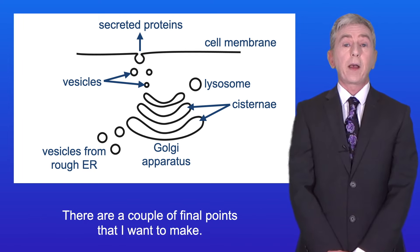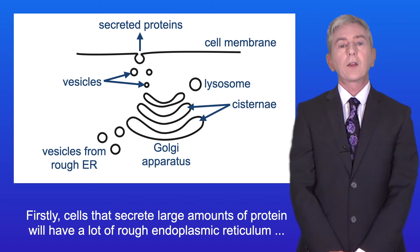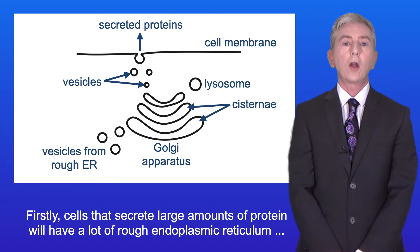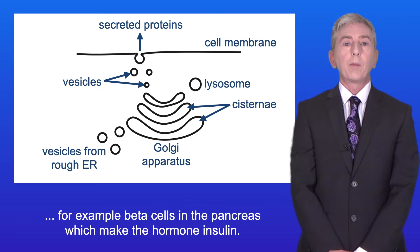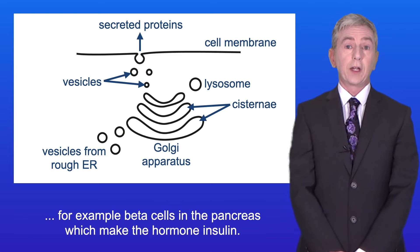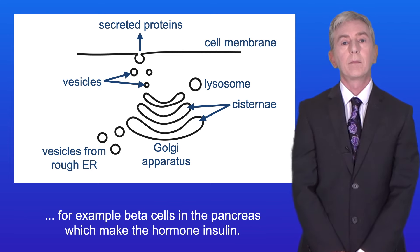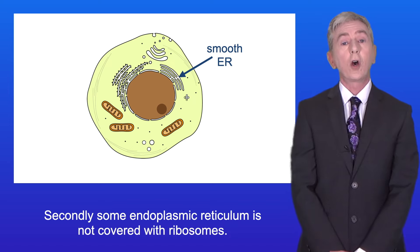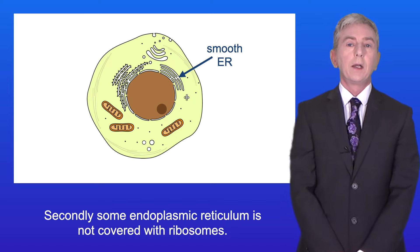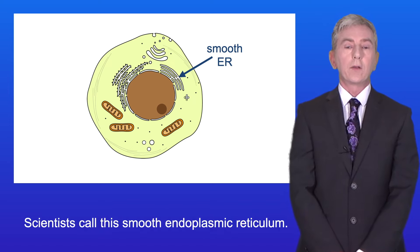There are a couple of final points to make. Firstly, cells that secrete large amounts of protein will have a lot of rough endoplasmic reticulum — for example, beta cells in the pancreas which make the hormone insulin. Secondly, some endoplasmic reticulum is not covered with ribosomes; scientists call this smooth endoplasmic reticulum.